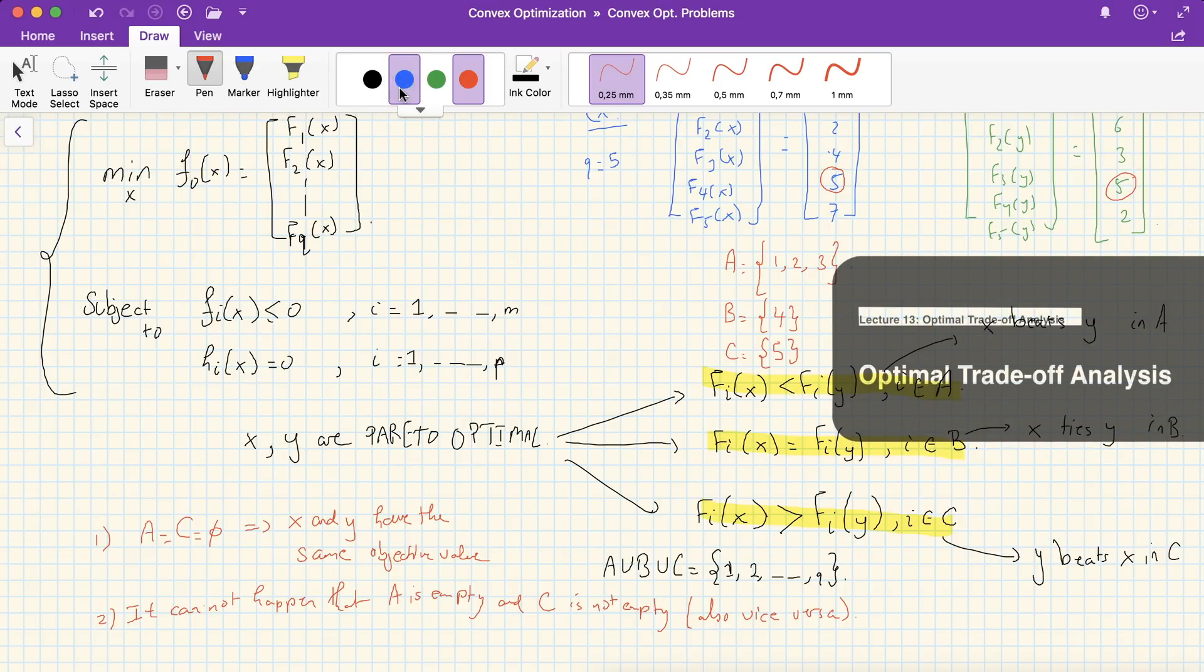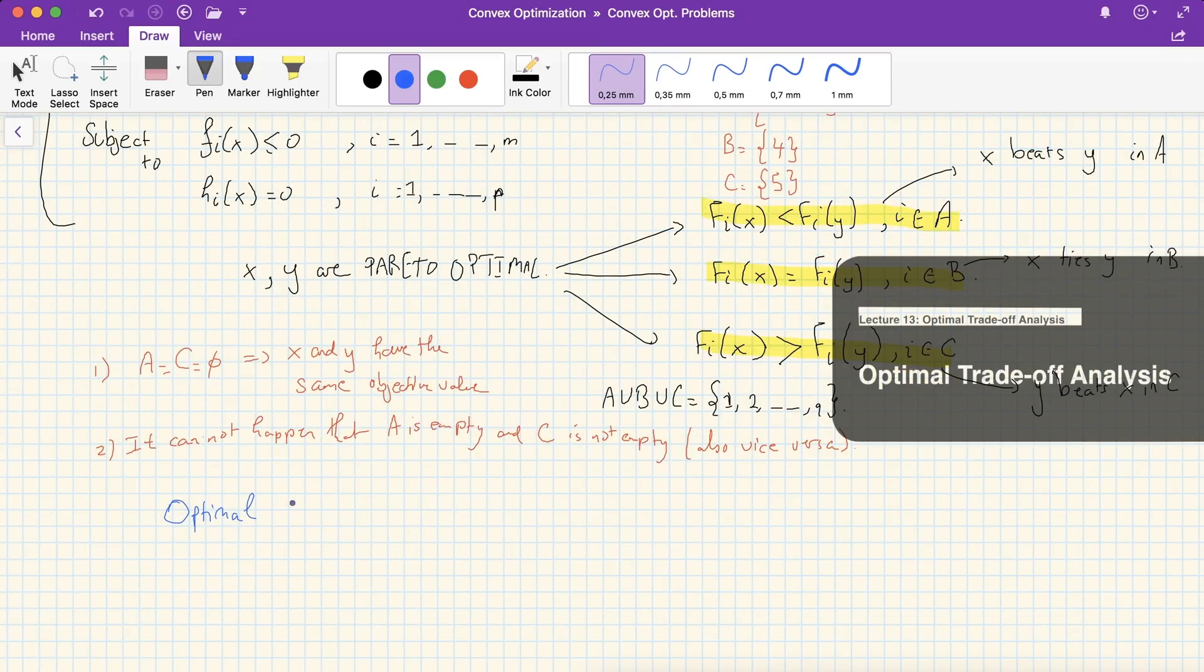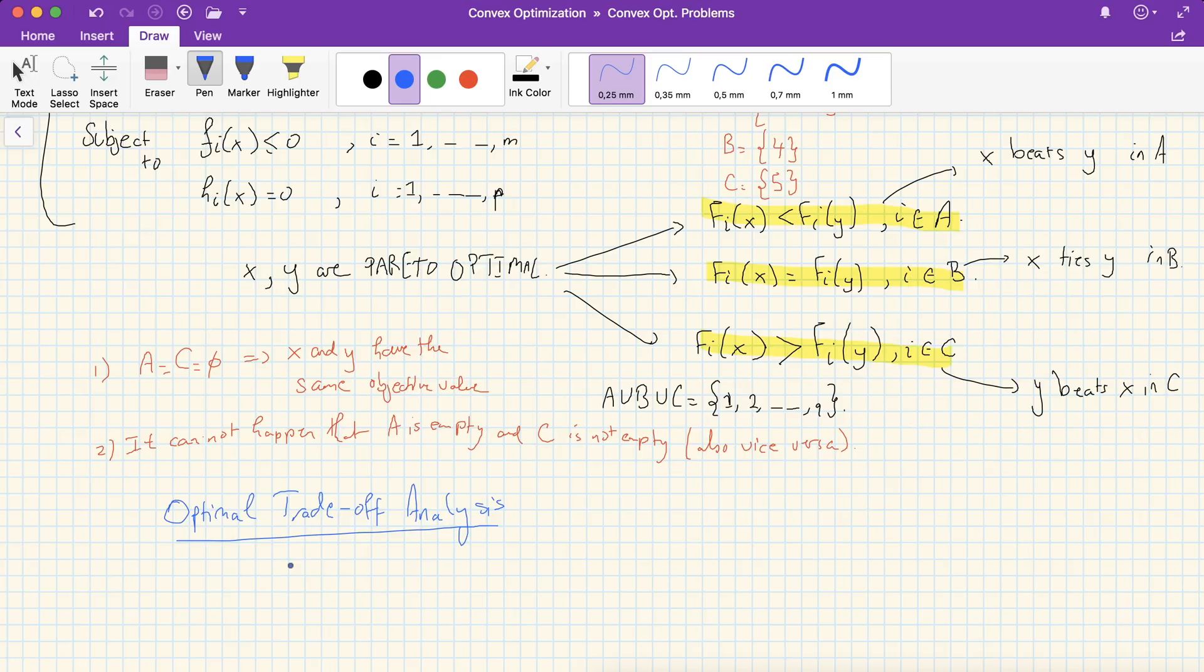The thing we will be looking at more closely is the optimal trade-off analysis. So optimal trade-off analysis will be to see how much worse we must do in one or more objectives, let's say in C, in order to do better in some other objectives, that is in A.